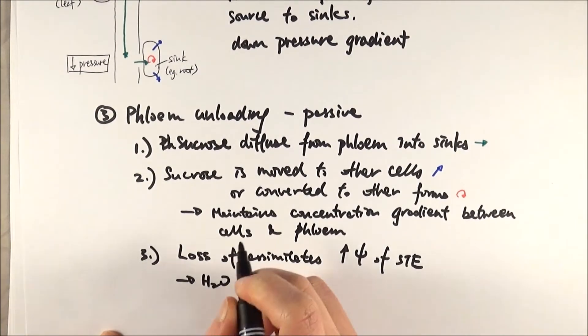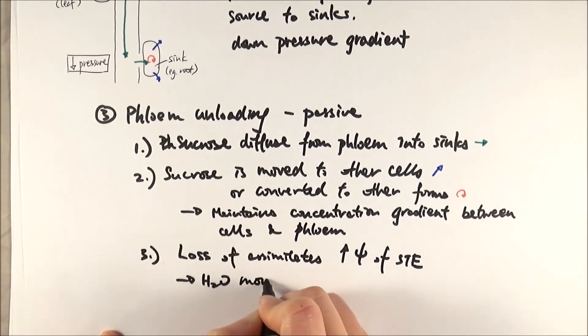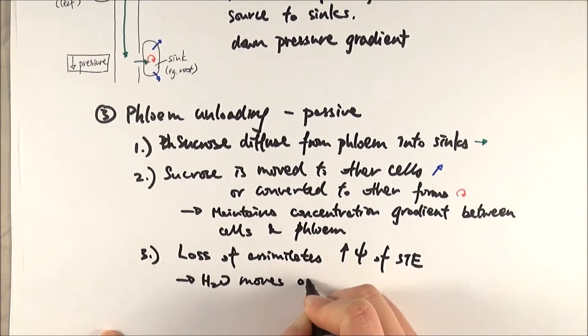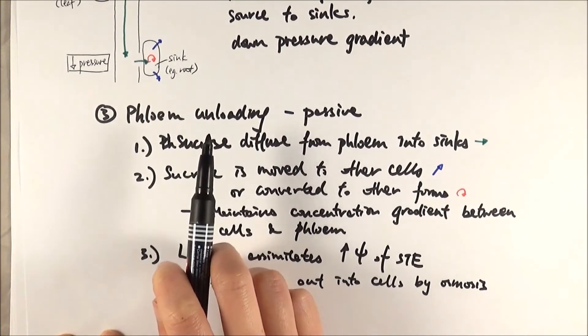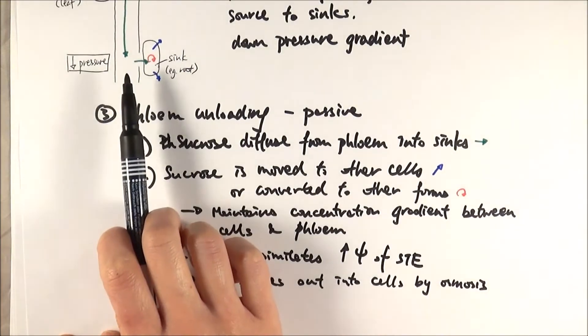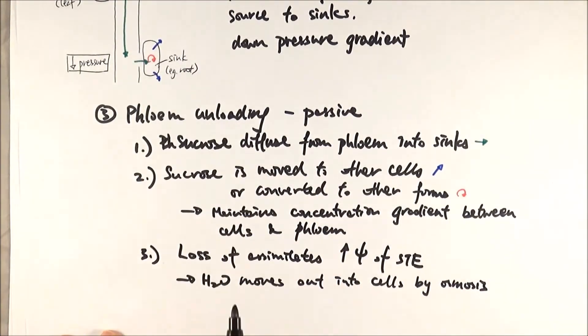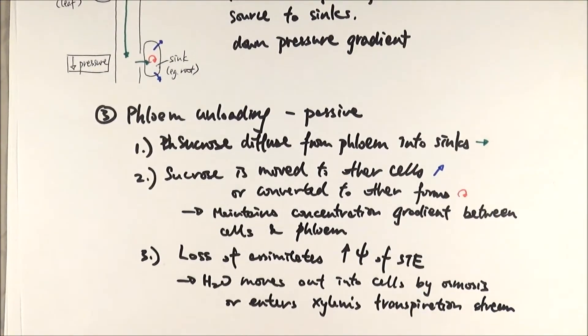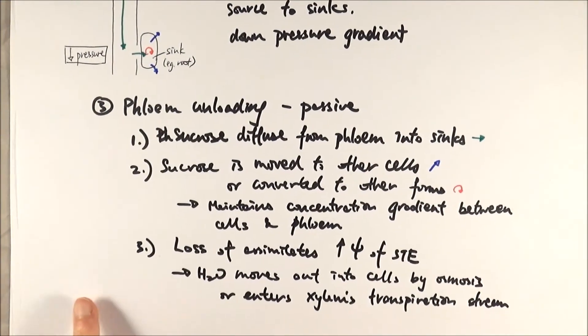As you can see, quite often, once the sugar or the sucrose moves, the water follows. So it can either go into the sink or it can actually go to adjacent xylem to enter the transpiration stream. So that one contributes towards the movement of water along the plant.